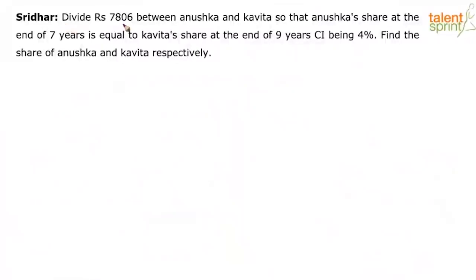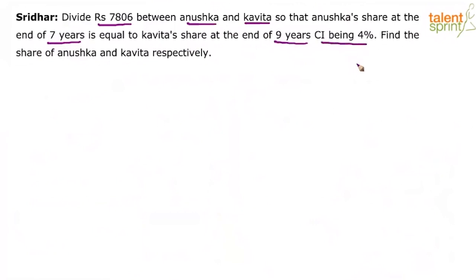Divide rupees 7806 between Anushka and Kavita so that Anushka's share at the end of seven years is equal to Kavita's share at the end of nine years, with compound interest at four percent. Find the share of Anushka and Kavita respectively.